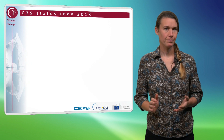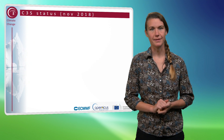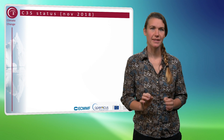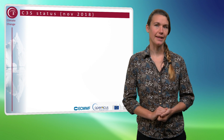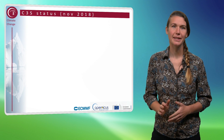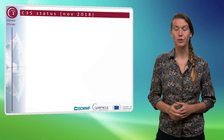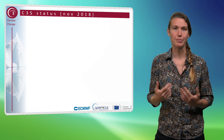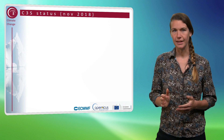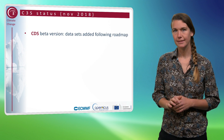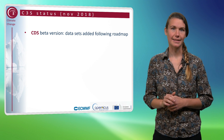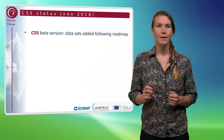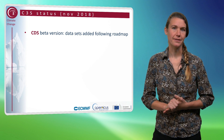The C3S system became operational in June 2018. This means it's a young system that's not perfect yet. Many of the things are online in the beta version, and we greatly appreciate your feedback on functionality or bugs that might still be present. A number of datasets are already online in the CDS, and there's a roadmap of what is planned to become available and when. The roadmap can be found on the C3S homepage.